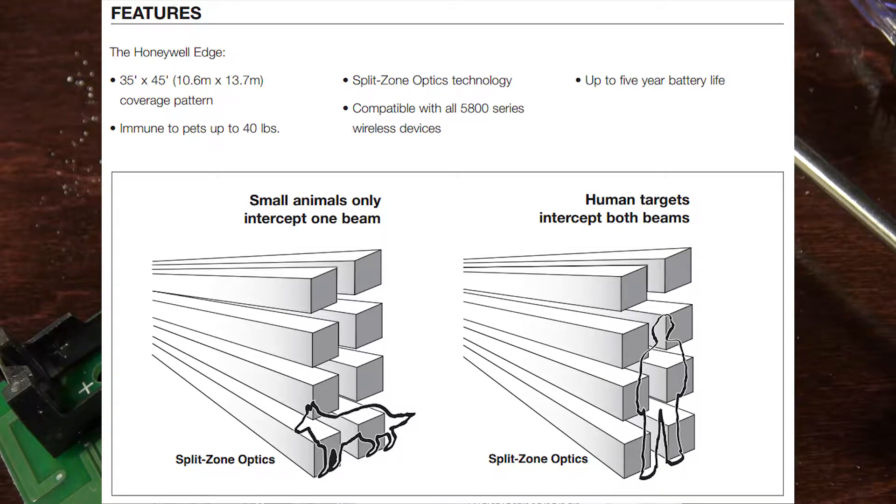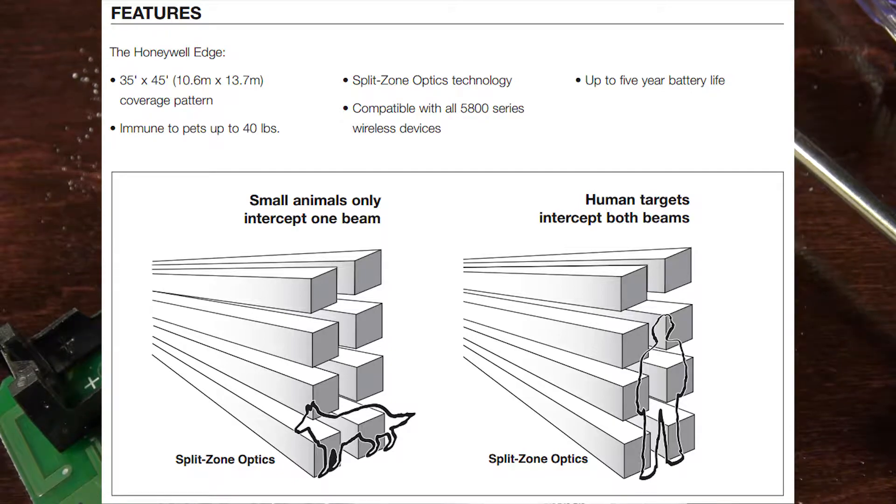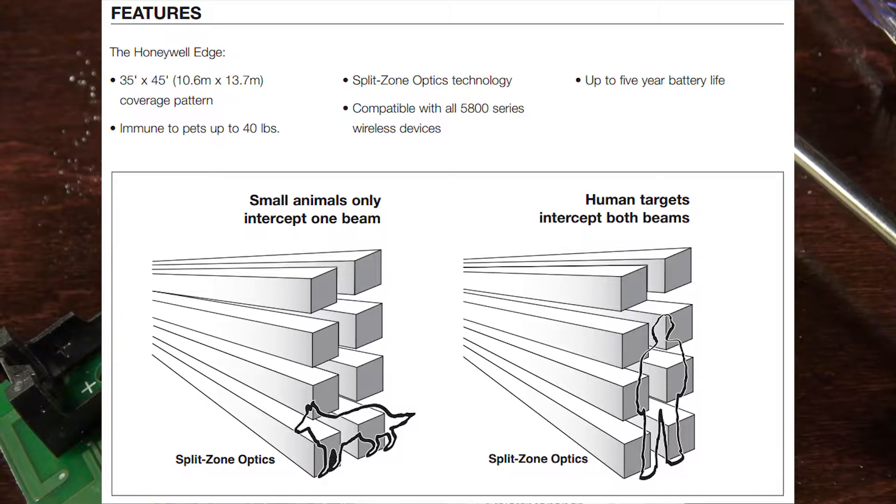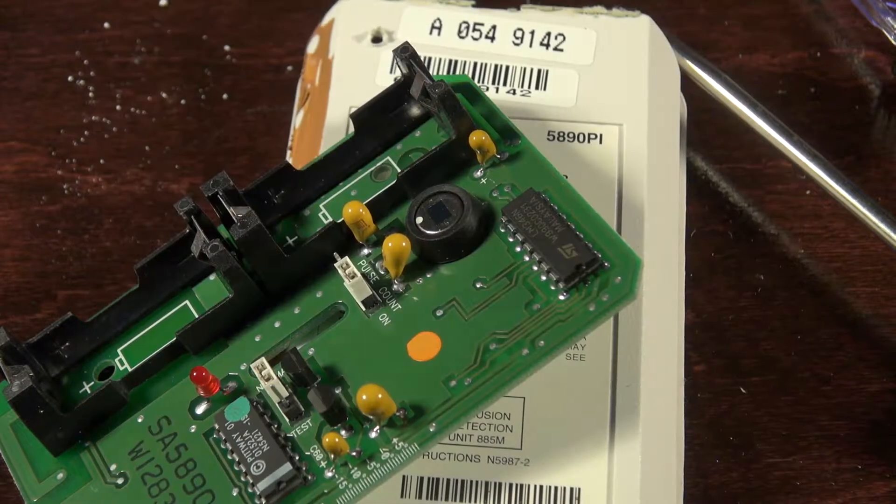I mean it's pet immune up to 40 pounds, but again that's weird. So it's using several zones in a pattern to see if there's motion within several different patterns.